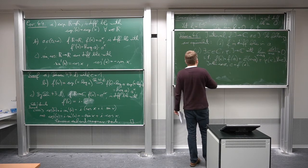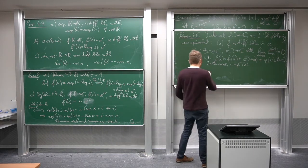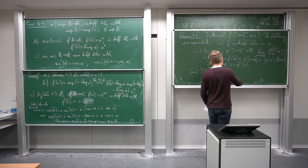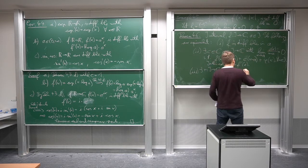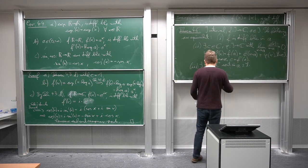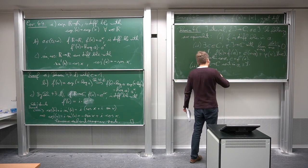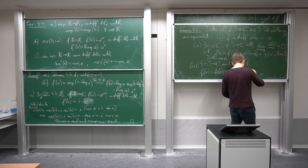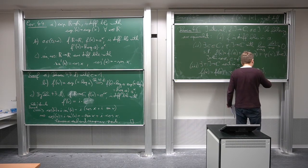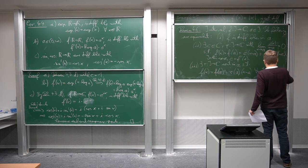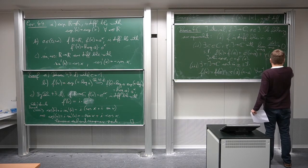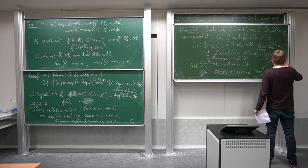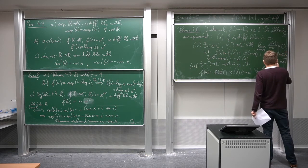Three: there exists a map R from I to C which is continuous at a, such that f of x equals f of a plus R of a times (x minus a) for all x in I. In this case, the value of R at the point a is the derivative.